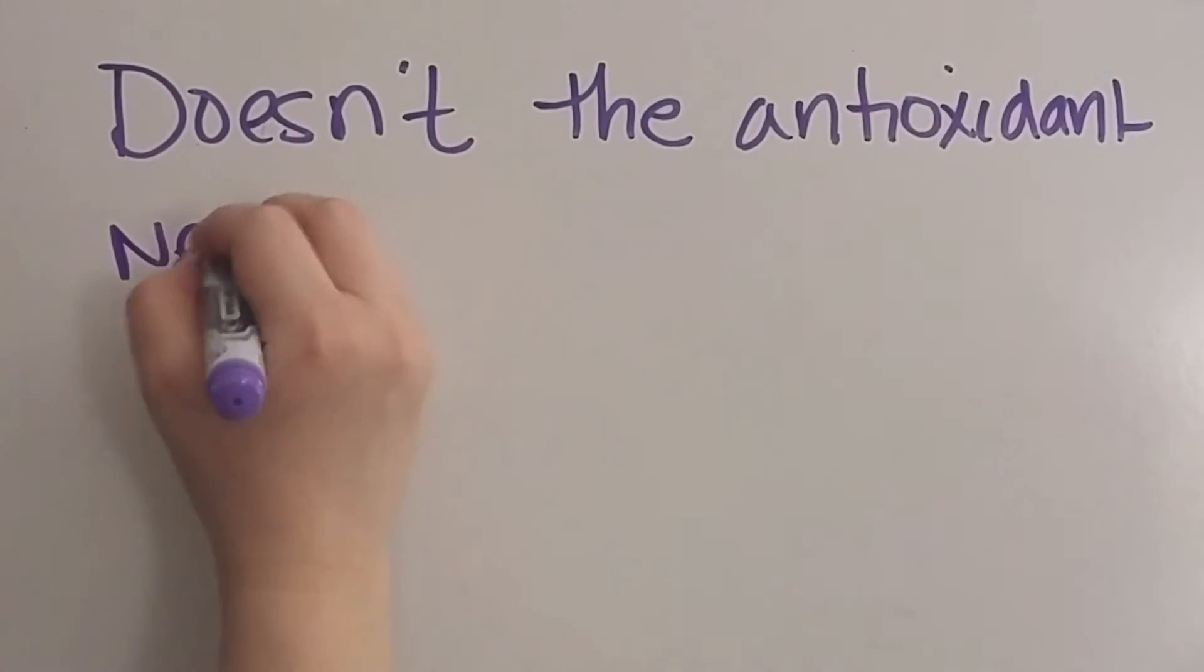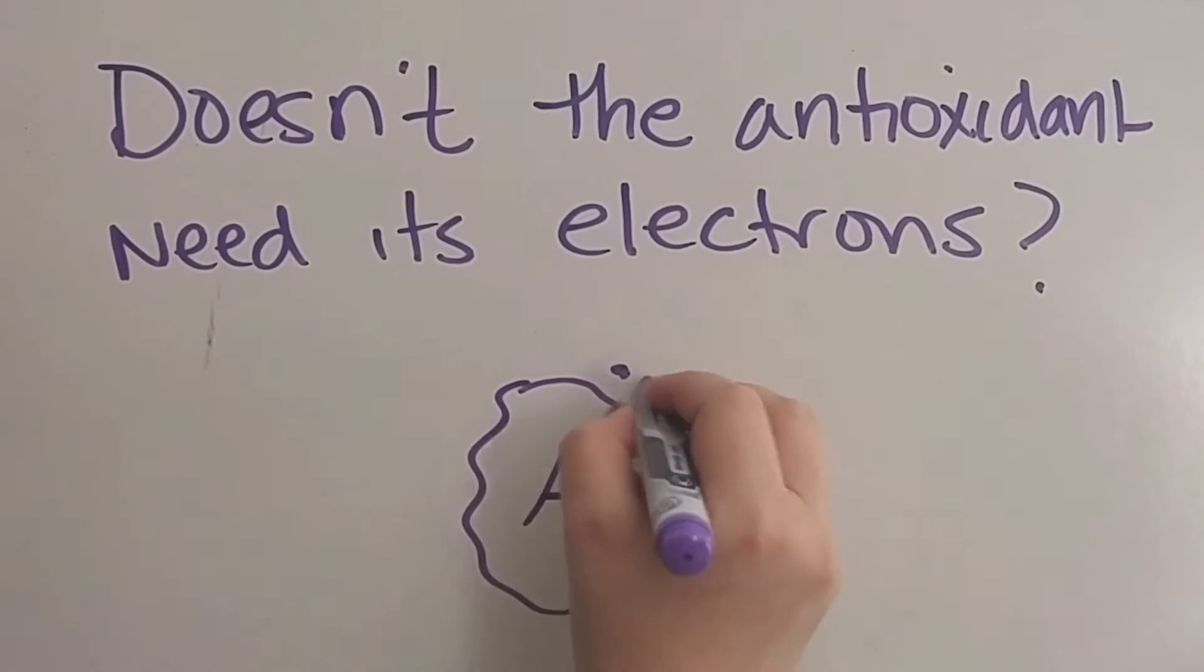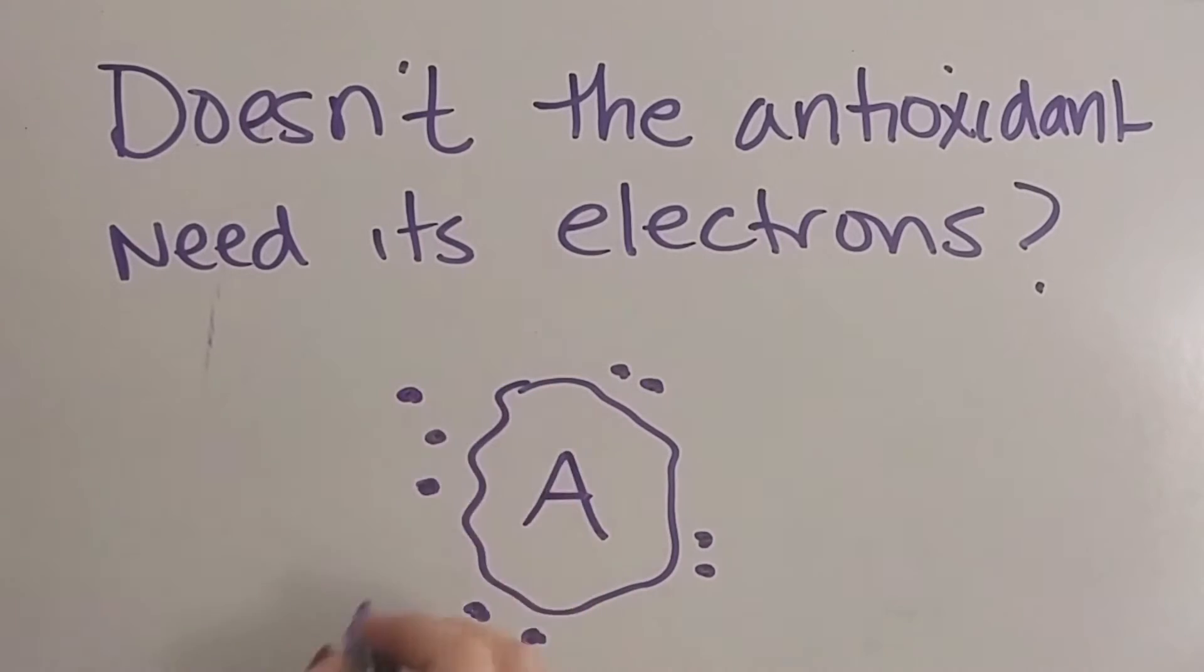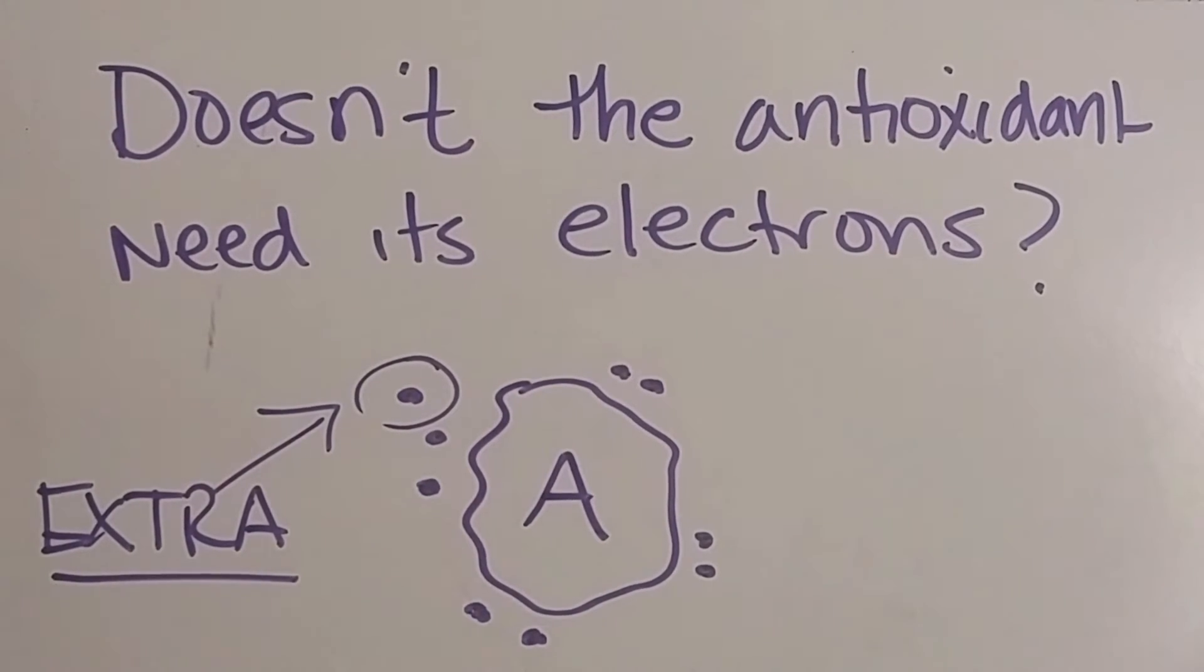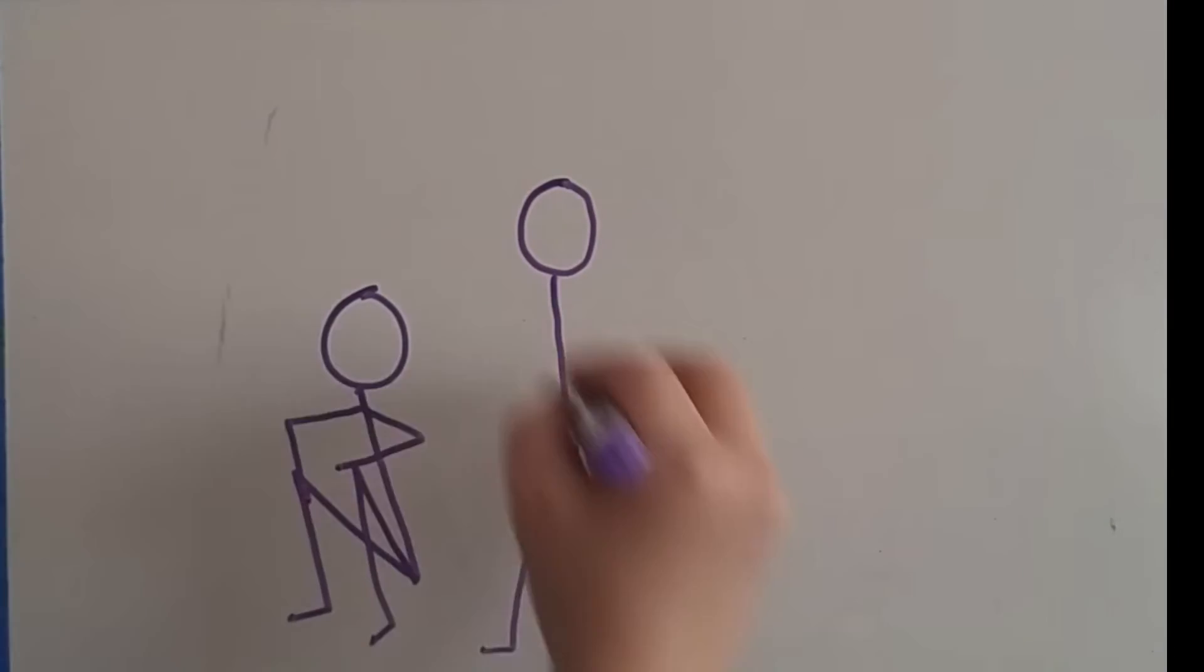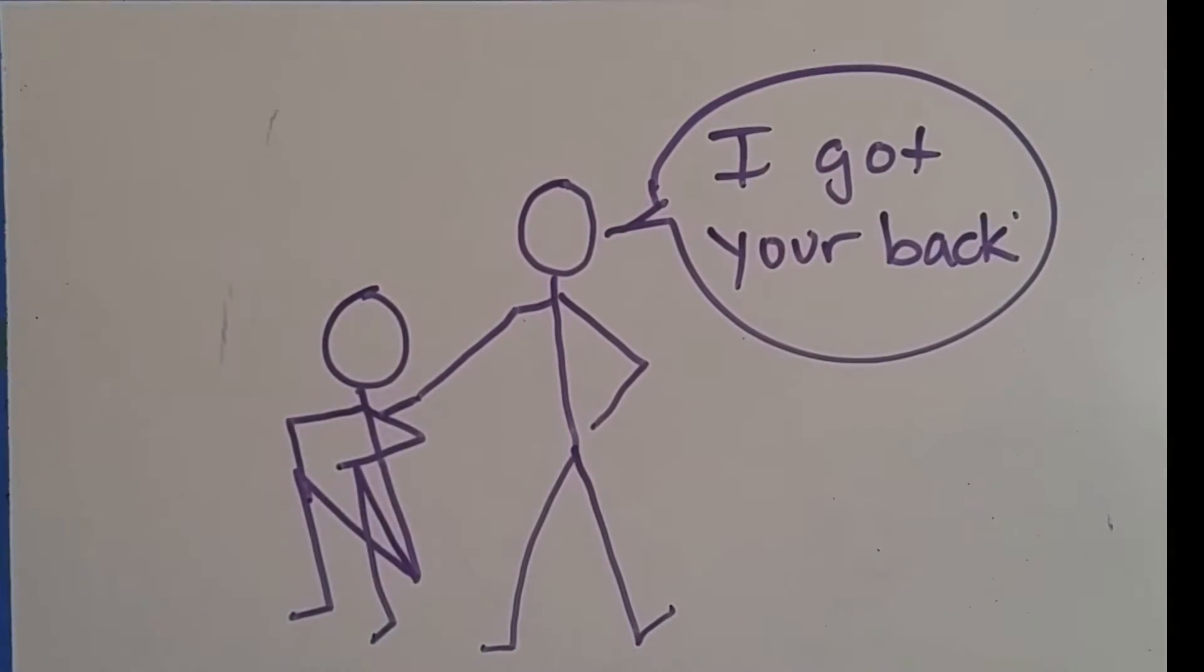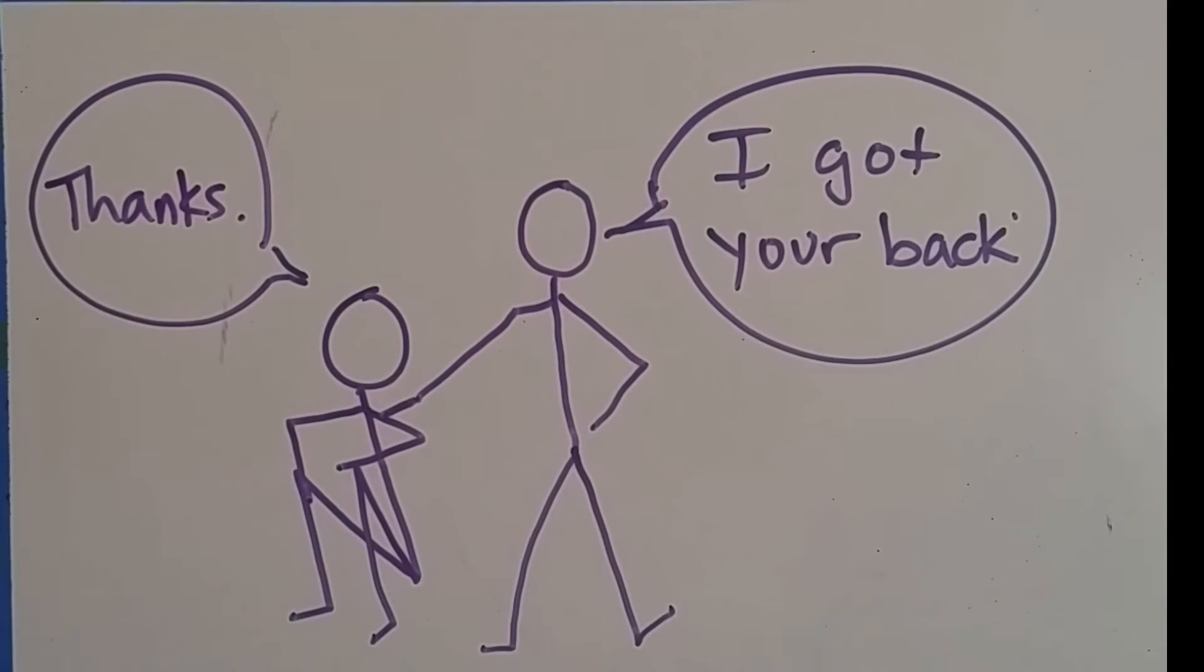Doesn't the antioxidant need its electrons? Why doesn't it become a free radical too? Well, they have plenty to spare. Electrons travel in pairs and stable molecules as singles and free radicals, but with antioxidants, they have an extra. Therefore, they happily give it up and remain stable, just like that helpful friend that always seems to have enough love to spare.